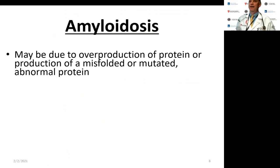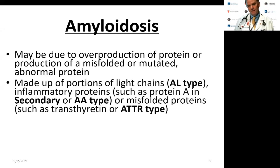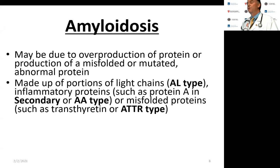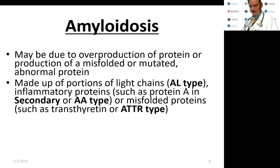There are many different mechanisms for amyloid to form. In simple terms, it may be due to overproduction of a normal protein, or production of a misfolded or mutated abnormal protein. Amyloid may be made up of predominantly light chains — that's AL amyloid, the most common type — or inflammatory proteins such as protein A in secondary or AA type, or misfolded proteins like ATTR or transthyretin.